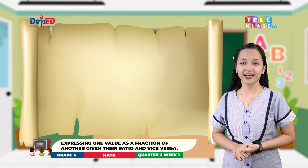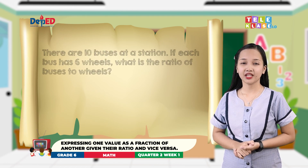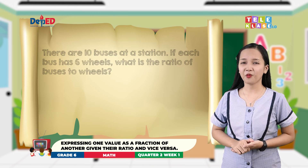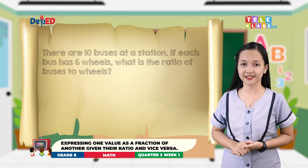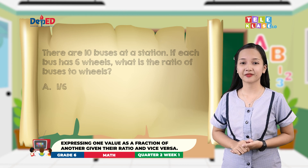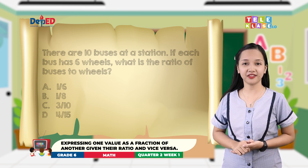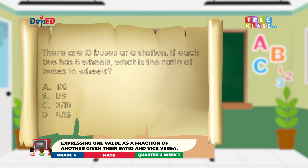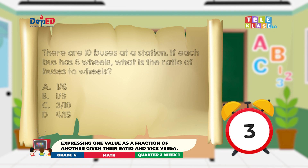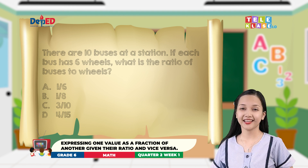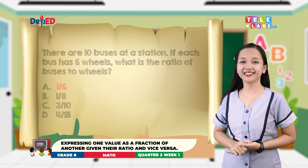Box 4 question: There are 10 buses at a station. If each bus has 6 wheels, what is the ratio of buses to wheels? A: 1 sixth. B: 1 eighth. C: 3 tenths. D: 4 fifteenths. The answer is 10 over 60, or 1 sixth.